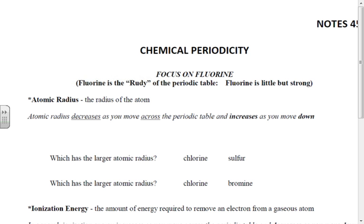So the trends we're going to be looking at today are all general trends — for the most part, they'll exhibit these properties. As we talk through the three different types of trends we're going to observe, we're going to focus on a certain element: fluorine. If you've ever seen the movie Rudy, Rudy was small but strong, very persistent. So fluorine is going to be our Rudy in the periodic table — it's going to have a small size but a lot of energy. The first thing we're looking at is the atomic radius.